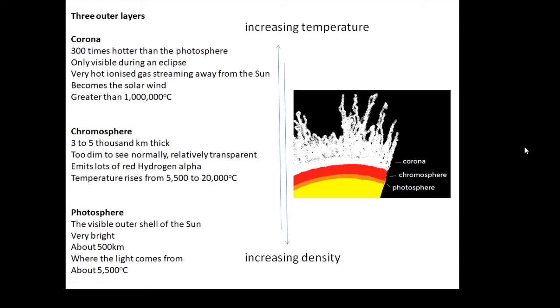The corona is made of very hot ionized gases - charged particles, positive and negative, streaming away from the Sun. It becomes the solar wind. The corona is not very dense, it's a very thin atmosphere - very hot but not dense.